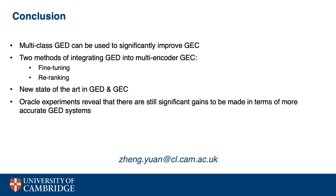In this work, we demonstrate the advantages of using multi-class detection for correction. We employ a multi-encoder GEC model and present two methods of integrating GED predictions into GEC systems: firstly, during GEC fine-tuning, and secondly, as a post-processing re-ranking step. We achieve new state-of-the-art results in both GED and GEC tasks. Oracle experiments reveal that our proposed GEC systems are very effective at incorporating new GED information, but there are still significant gains to be made with more accurate GED systems. That is the end of my talk. Thank you so much!